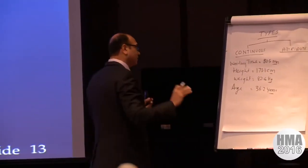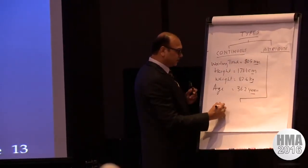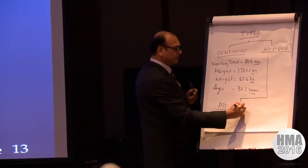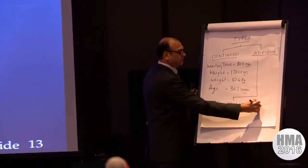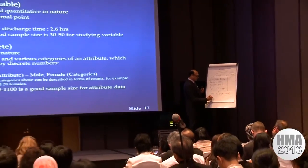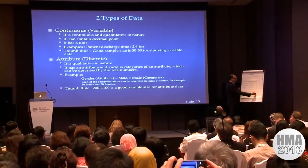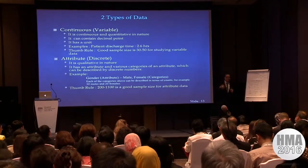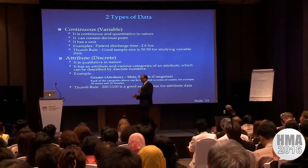And there is something called attribute data. Attribute data has got an attribute — it has some category and it has some count. For example, gender: male or female. There are 30 males and 20 females. We can't have 30.1 males. So that is attribute data.